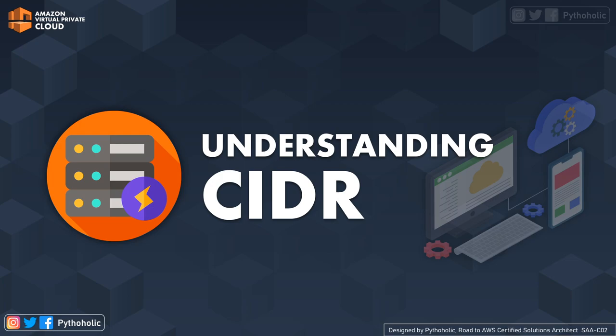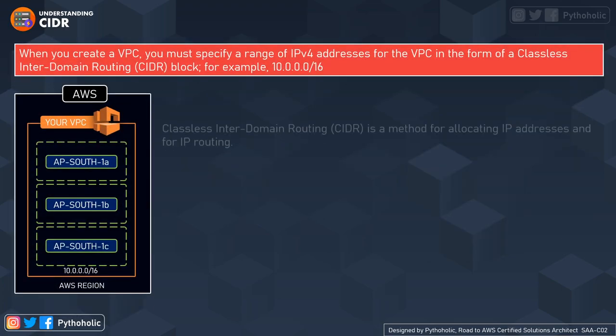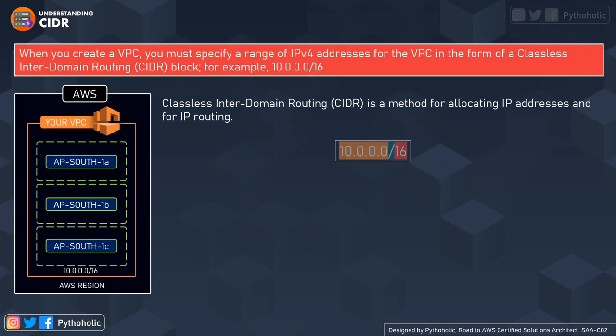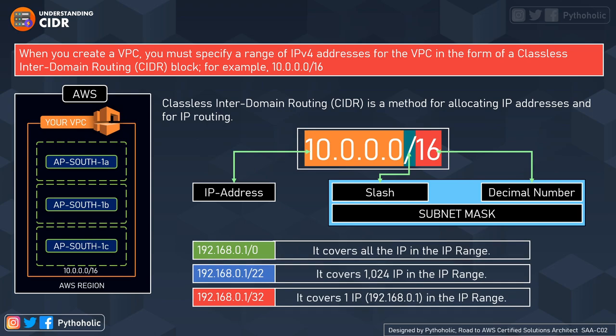Now let's start with a very important topic: CIDR. What is CIDR? The acronym stands for Classless Inter-Domain Routing. Classless means we actually ignore the address classes like A, B, or C.